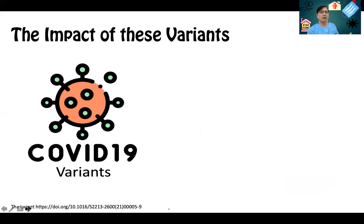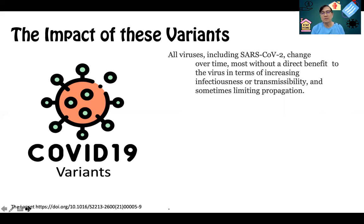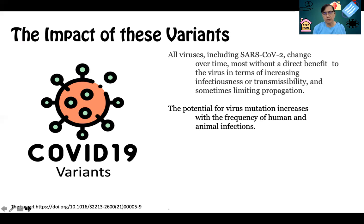All viruses, including SARS-CoV-2, can change over time — they mutate, but most mutations provide no direct benefit to the virus, and some even limit its propagation. However, the potential for this virus to mutate further increases with increased frequency of human infection. So the more people are getting infected with COVID-19, the more chances there are for this virus to mutate.